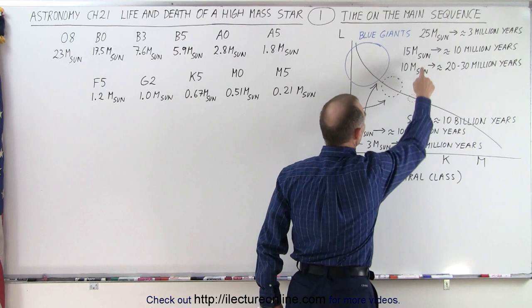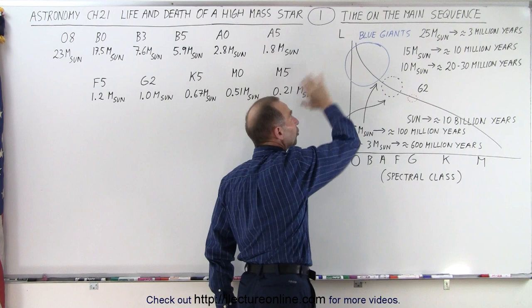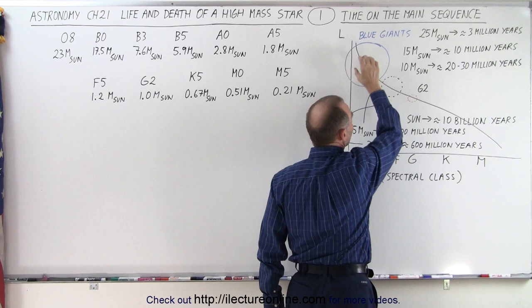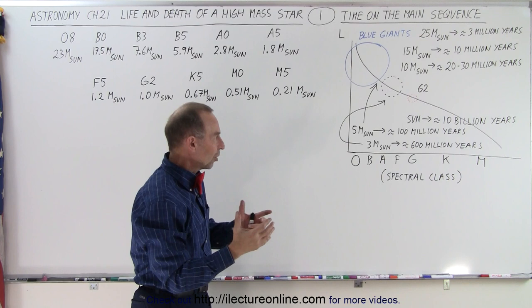What about the bigger stars? Well, depending upon how much mass they have, starting with one that has 25 times the mass of the Sun, that star will only last about three million years on the main sequence. Now those are of course the very largest of the large blue giants. 15 times the mass of the Sun, it will burn up through its hydrogen into turning into helium in about 10 million years. And if it has 10 times the mass of the Sun, it will last about 20 or 30 million years on the main sequence converting hydrogen to helium.